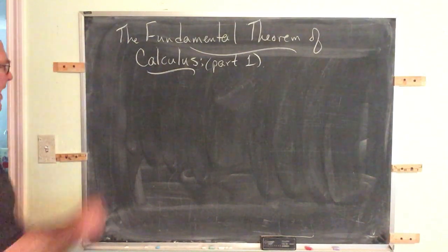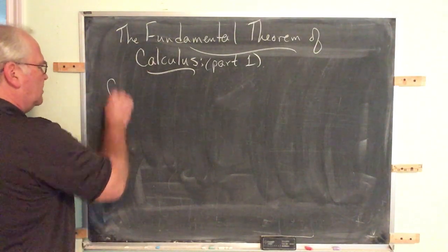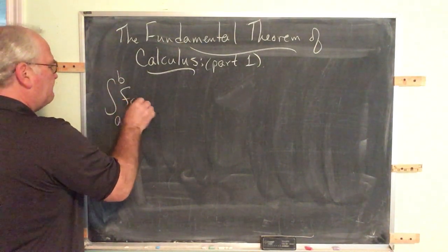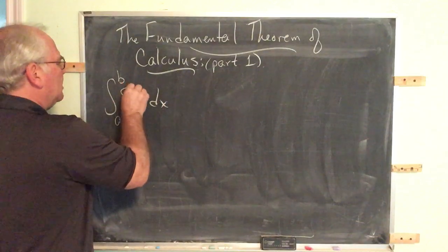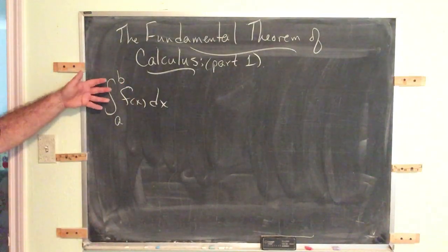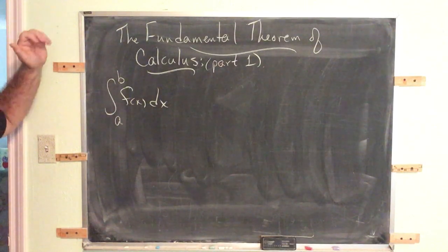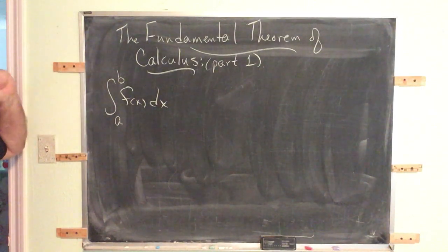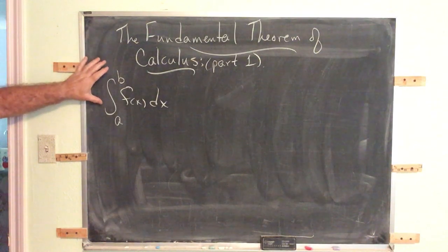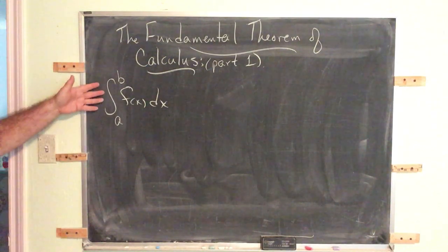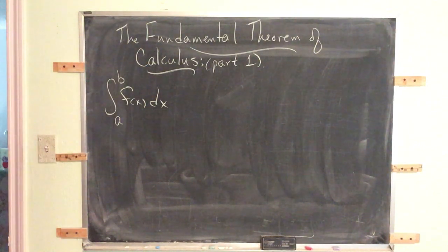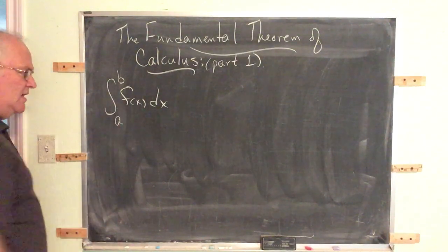The Fundamental Theorem has to do with how to compute this definite integral. So we will assume we have all the structure that goes into this expression. We have a continuous function on the closed interval, differentiable on the open interval. We have a partition, everything that goes into the construction of the Riemann sum. And when we take the limit of that Riemann sum, we generate this definite integral.